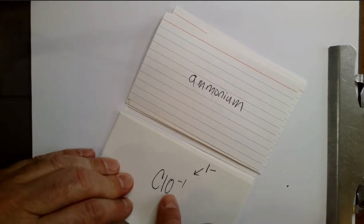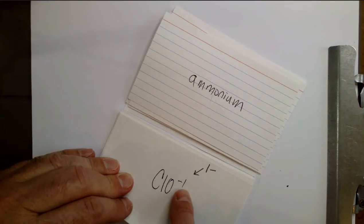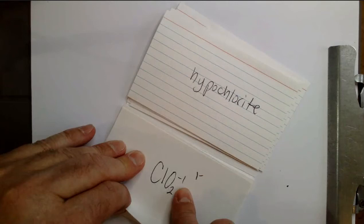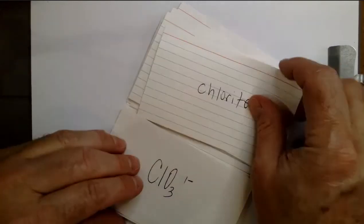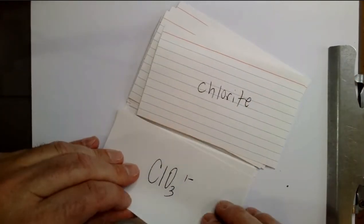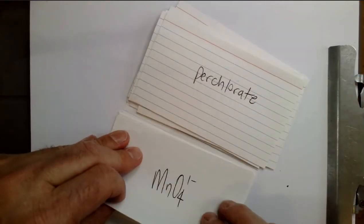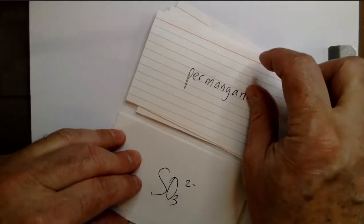CLO 1- hypochlorite. CLO2 1- chlorite. CLO3 1- chlorate. CLO4 1- perchlorate. MnO4 1- permanganate.